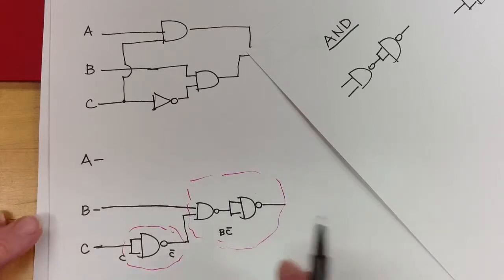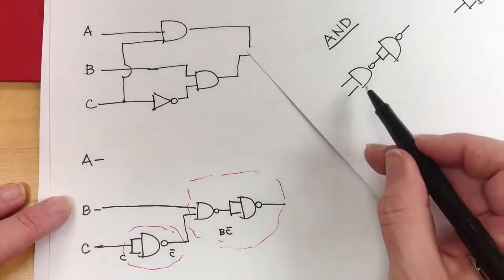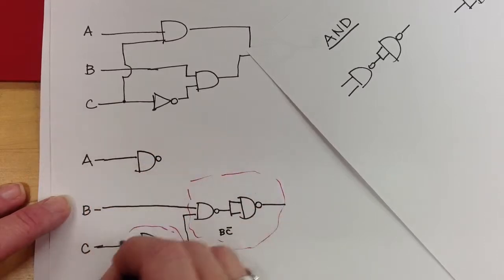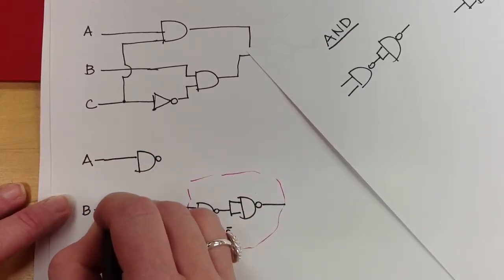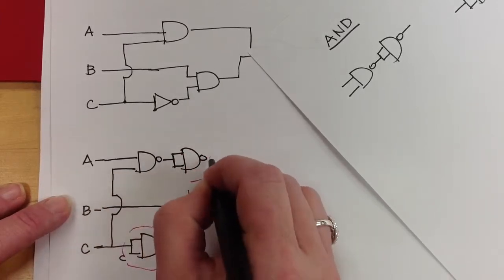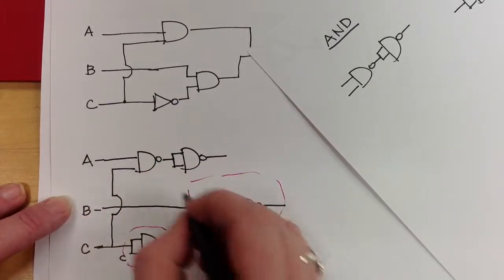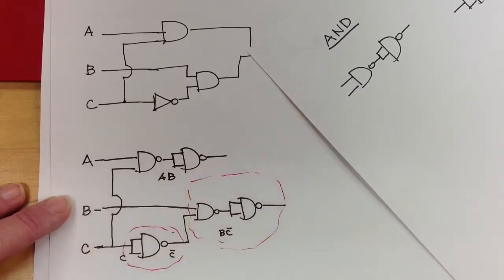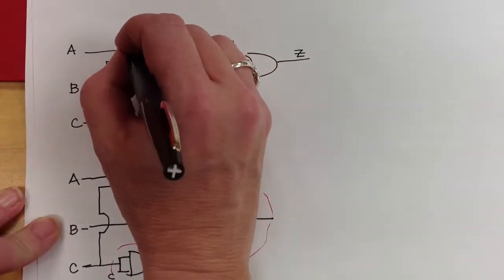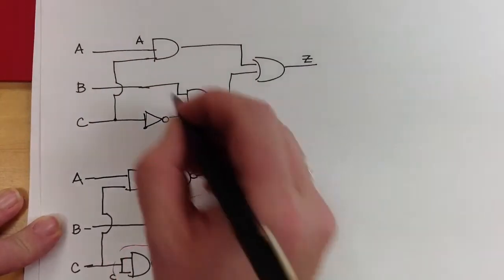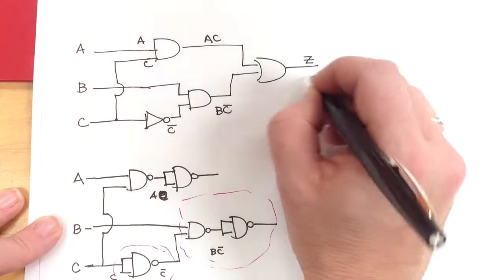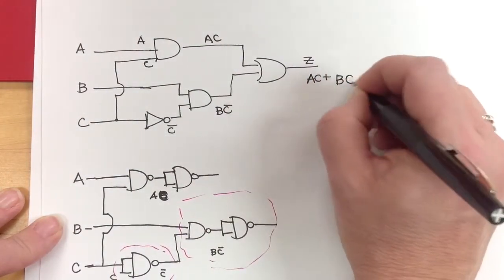Now I need to make A AND C. Again, using the AND gate configuration — a NAND gate with A and C as inputs, then that output fed into both inputs of another NAND gate. That produces A AND C. Finally, I need to make the OR gate. I take A AND C into one side and B AND NOT C into the other, using the three-NAND OR configuration. The output Z equals A AND C OR B AND NOT C.